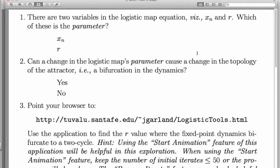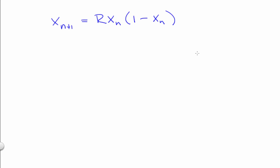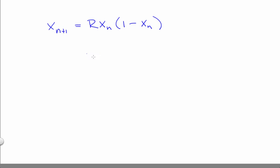The first problem on this quiz was primarily just about vocabulary. In the logistic map, the parameter is r and the state variable is x.